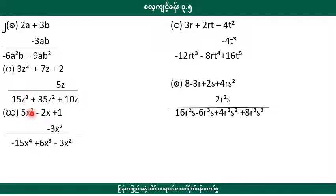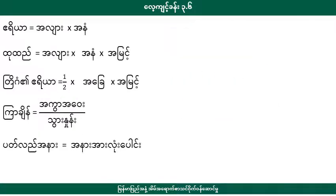2a squared minus 3a squared. Let's see what the students have, as well as students. Then you may have read the story, how to read the story, and how to read the story of students and studies.